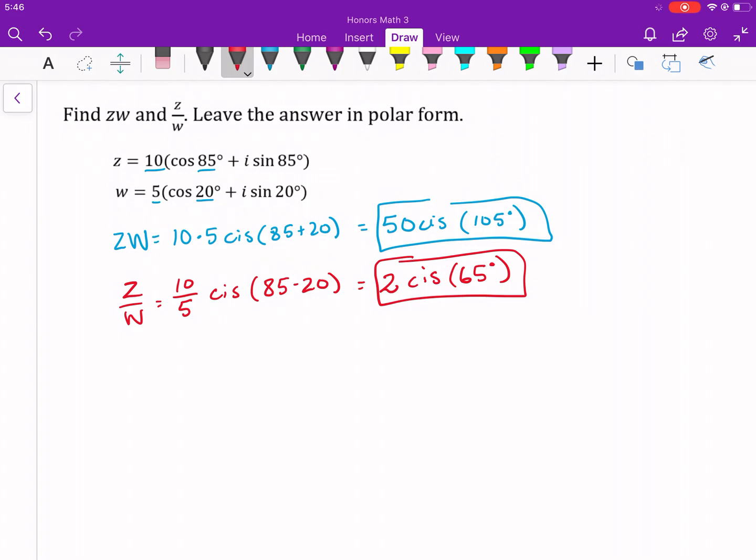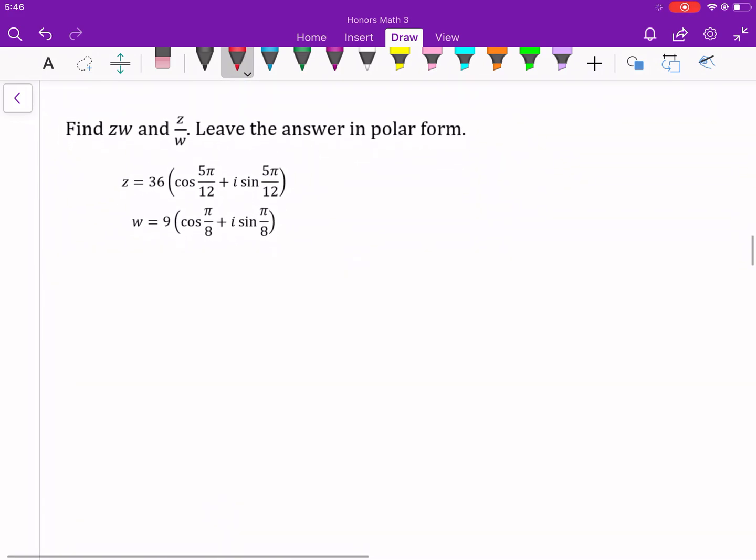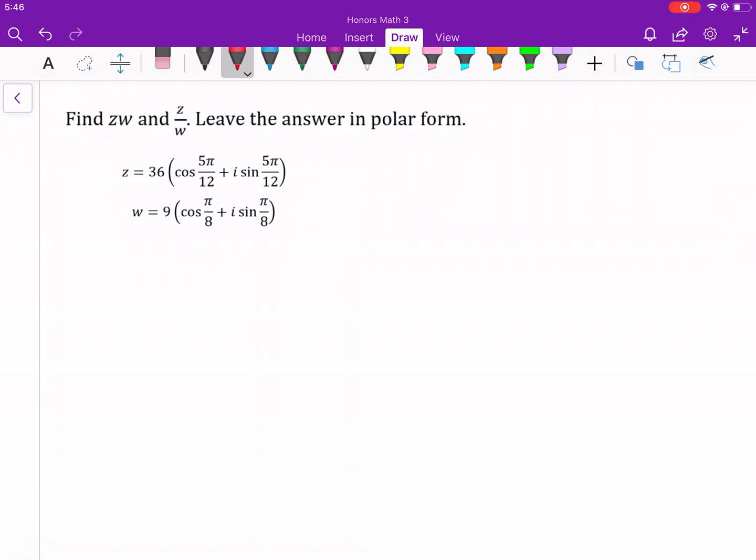All right. If you want, you can skip this next one, because it's basically the same idea. I'm just using radians. But same kind of general rule. So zw would be 36 times 9, cis, 5 pi twelfths plus pi over 8.